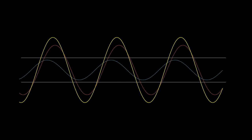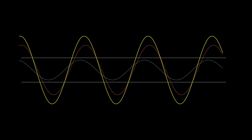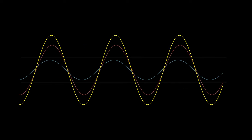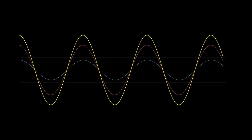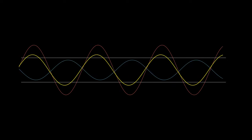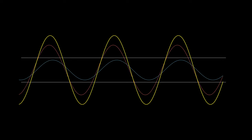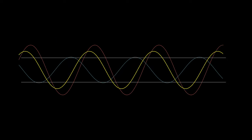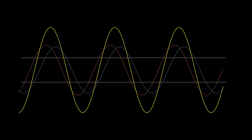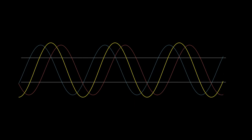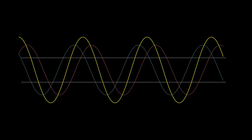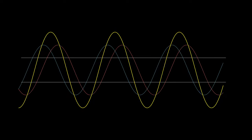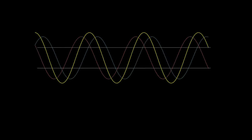As the mismatch between the load and the characteristic impedance increases, the reflected signal increases as well, and hence the interference gets bigger and bigger. If the transmitted signal gets reflected completely, the resultant is then a completely standing wave, not moving forward or backward.